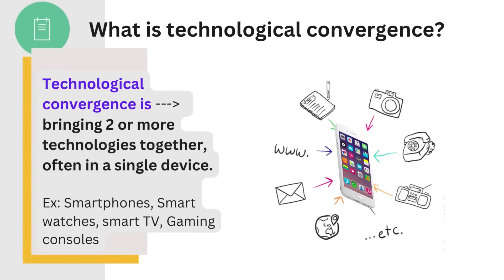Those five things are: what is meant by technological convergence in digital devices, examples, and the advantages and disadvantages of technological convergence. So first — technological convergence — that is bringing two or more technologies together, often in a single device.